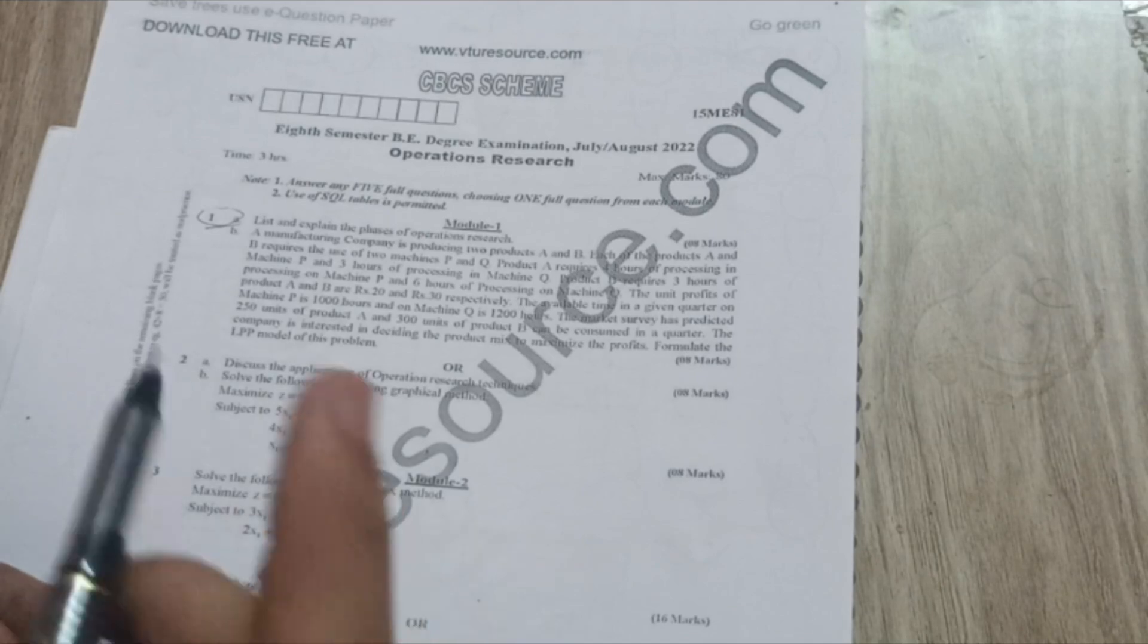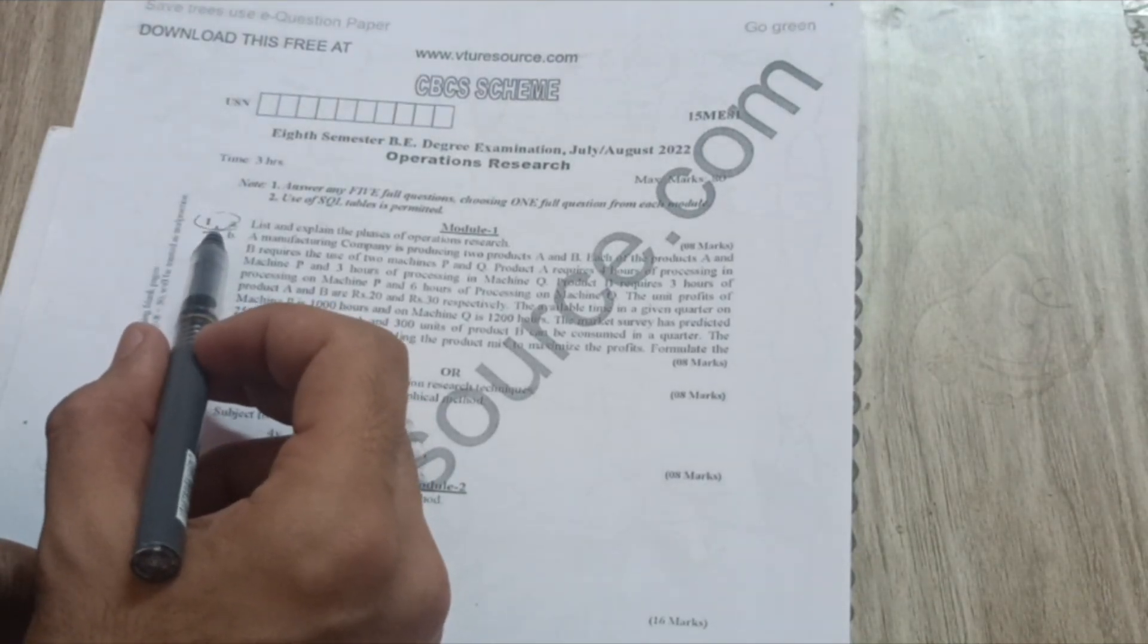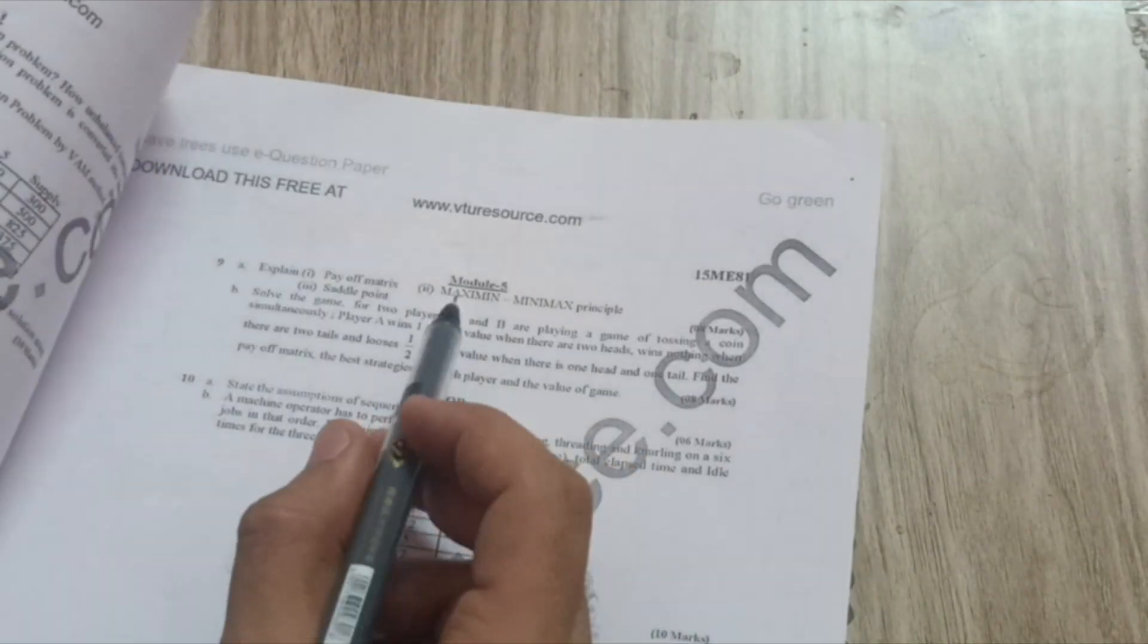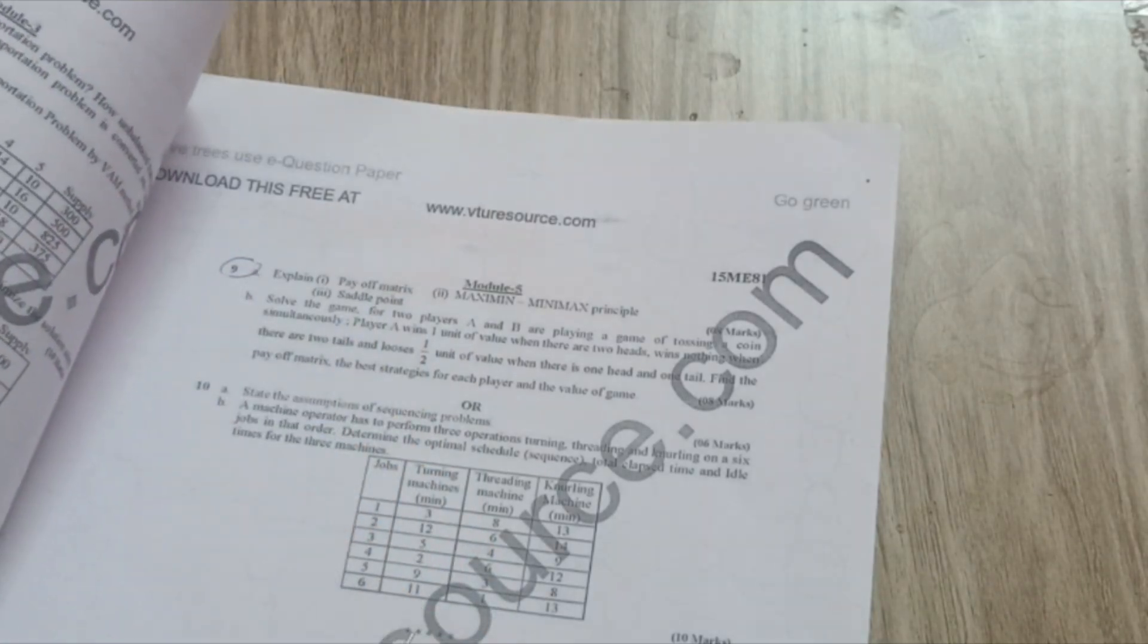For the mathematics subject it is important, not for mathematics only, for all the subjects. So shuffling is important. Try to write down the first question, one A, and then go for three B or like that. Suppose if you are taking module fifth, go for nine A.